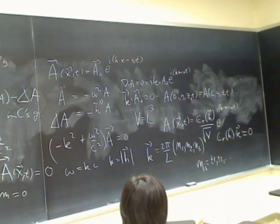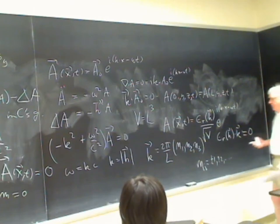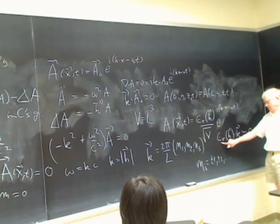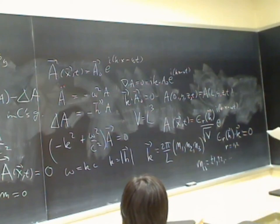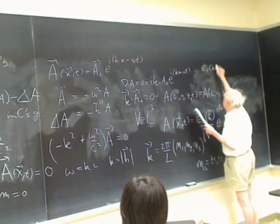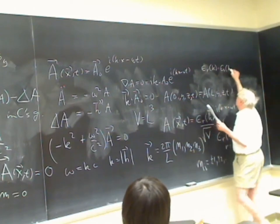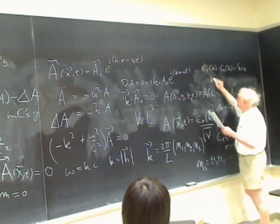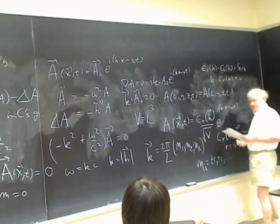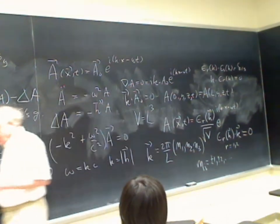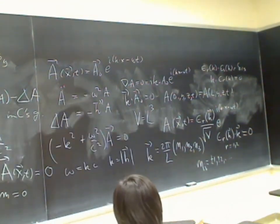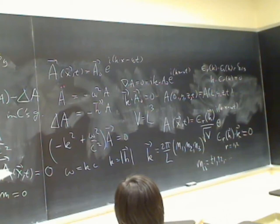In 3D space there are three orthonormal vectors: k̂ and two transverse polarization vectors ε₁, ε₂ (r = 1, 2). We normalize them: ε^r(k)·ε^s(k) = δ_{rs}, and k·ε^r(k) = 0. If taken to be real, they represent linearly polarized fields.